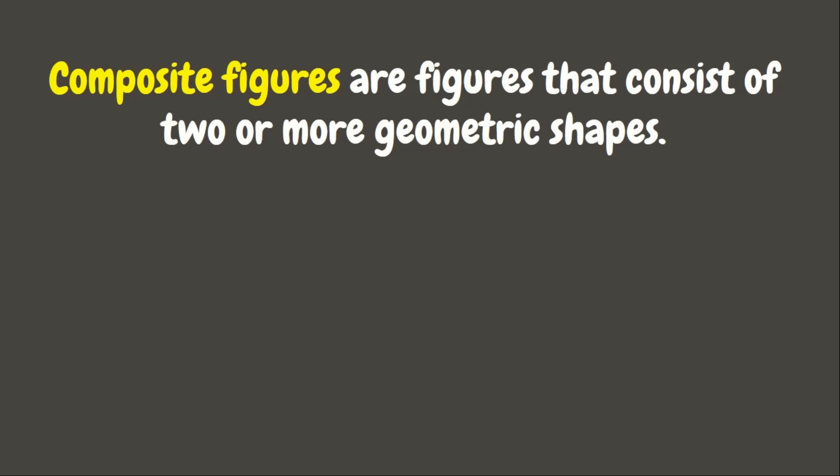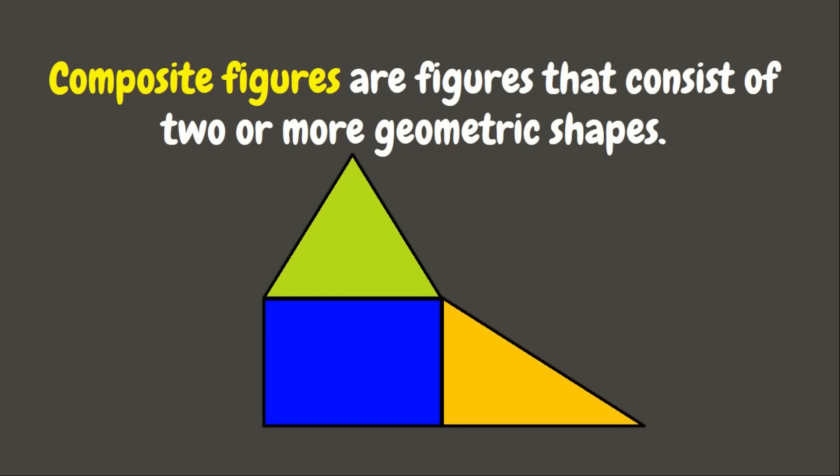For example, we have here a composite figure which consists of three geometric shapes — it has two triangles and one square. To find the area of a composite figure, we simply need to get the area of each geometric shape and combine them together.